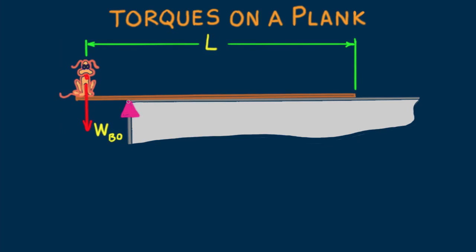Let's draw a fulcrum here at the edge of the building. That's the point about which the plank will rotate if it gets extended too far and tips over.